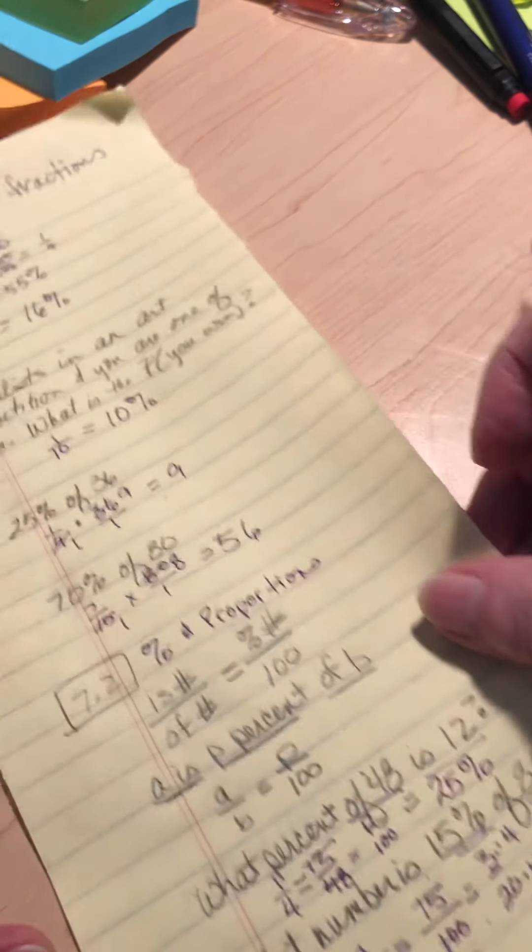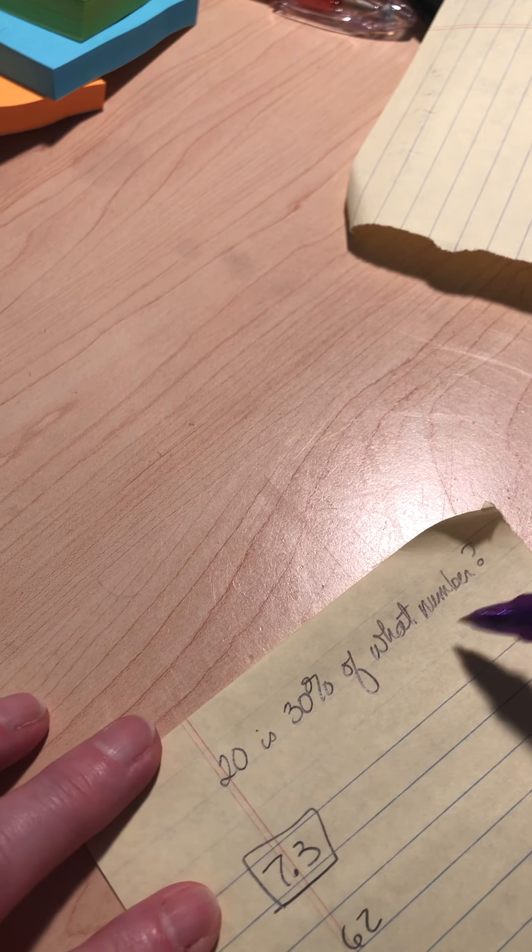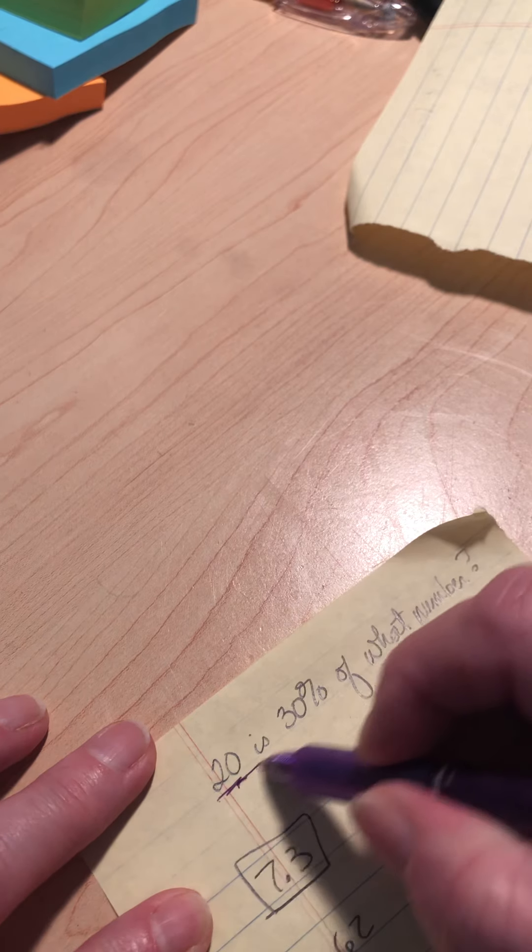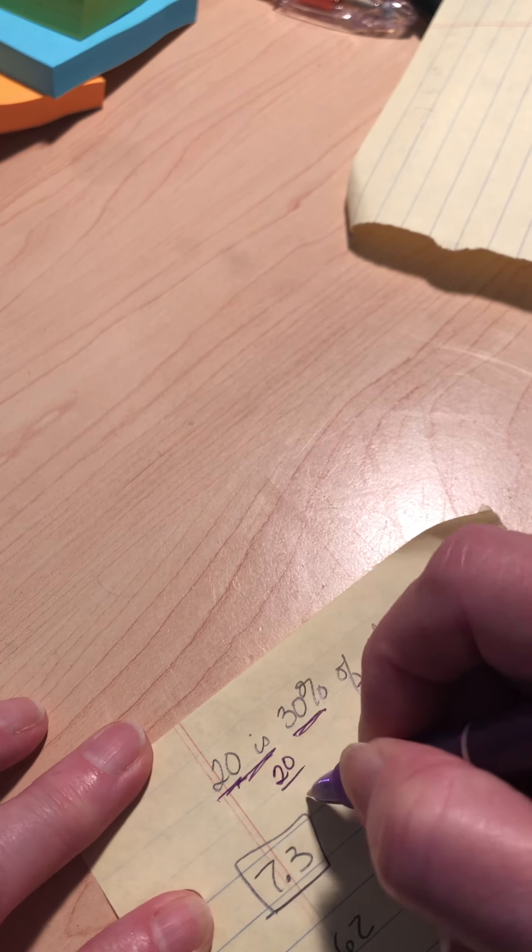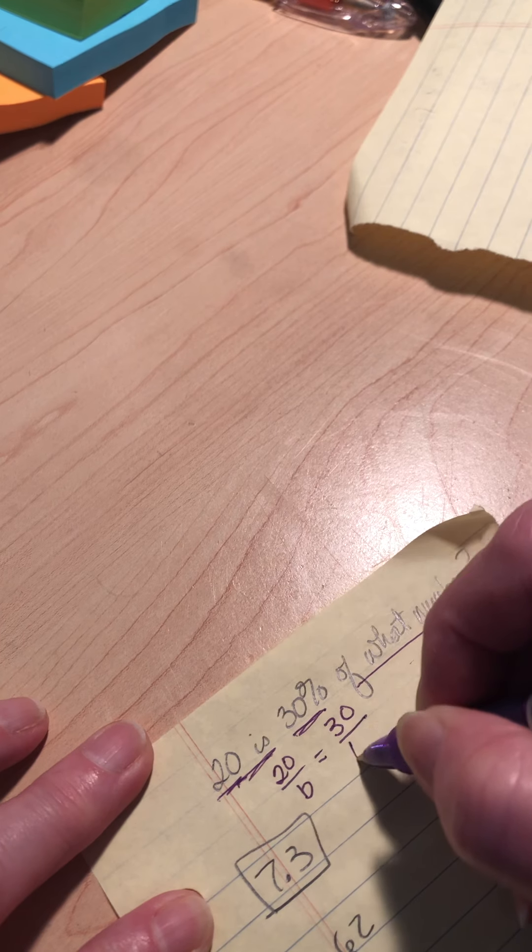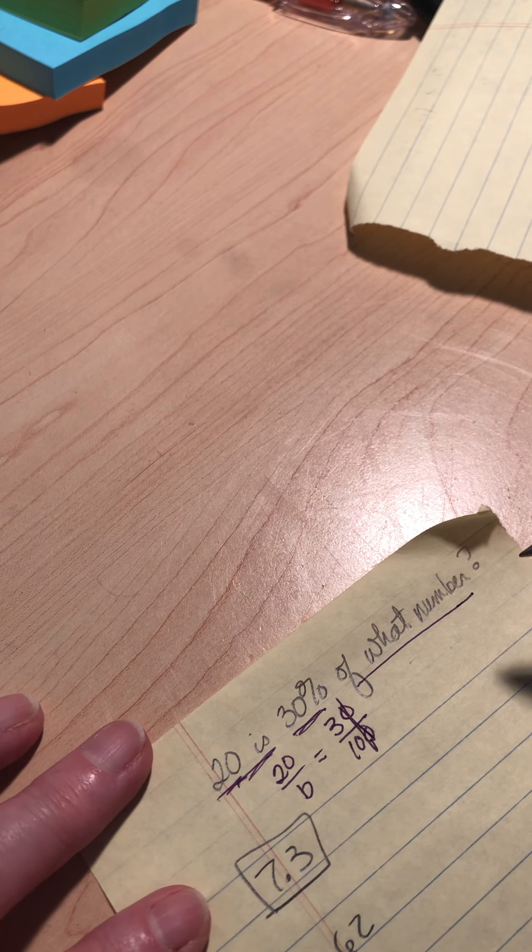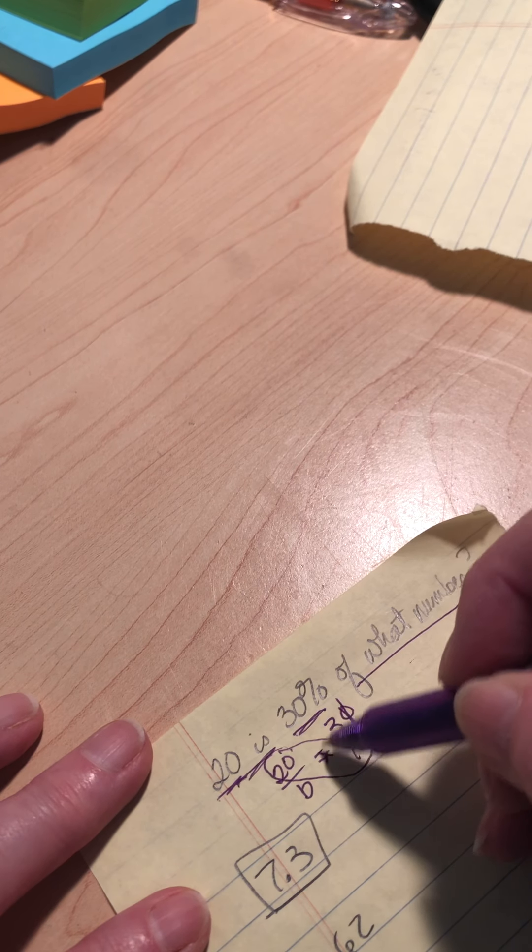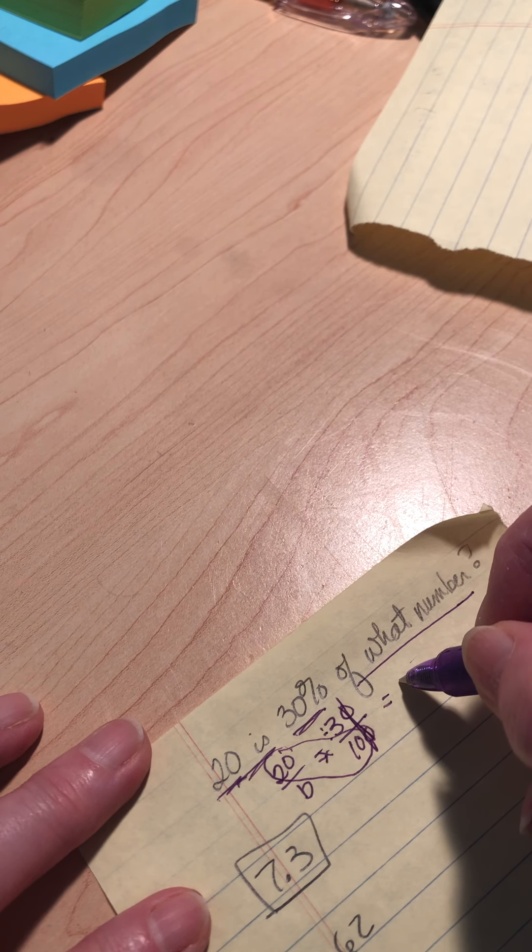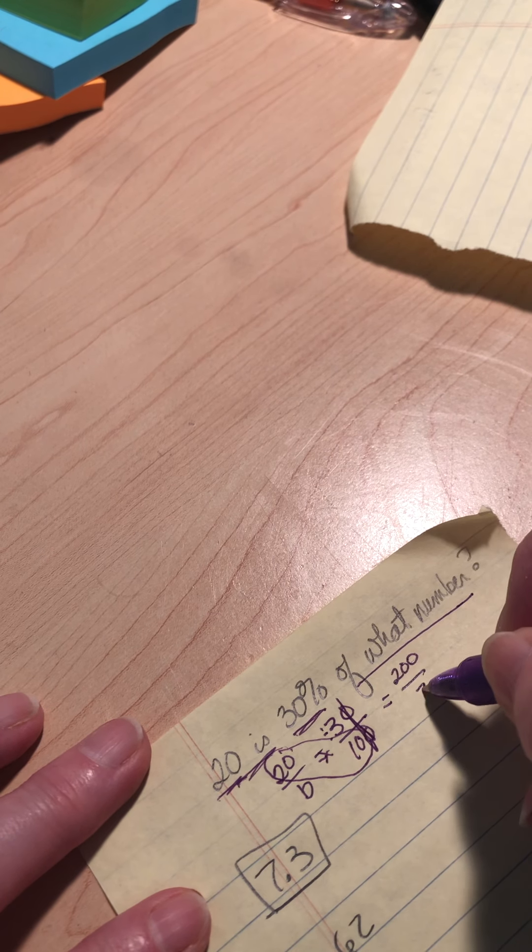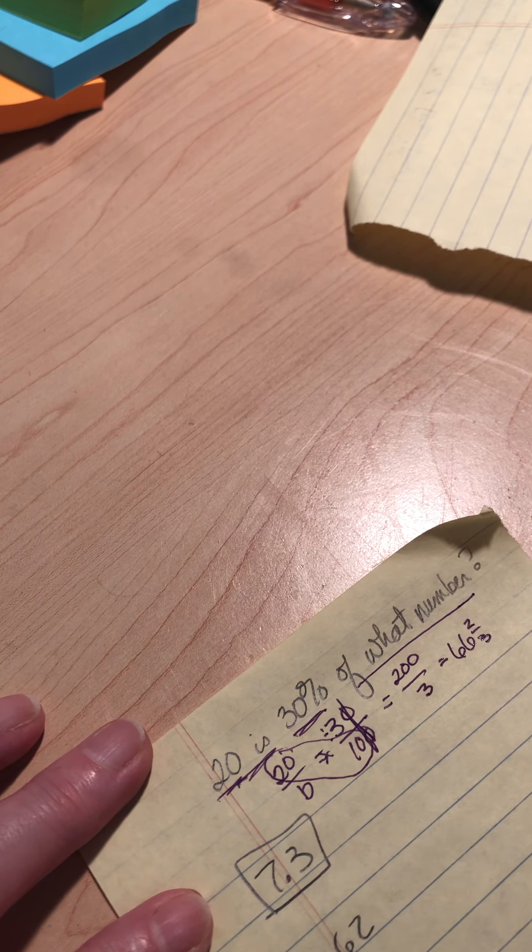So that kind of takes us, we got one more. What if I had 20 is 30% of what number? Well, I've got my is number, I've got my percent number, I don't have my of number. So that means I've got 20 over B equals 30 over 100. Those zeros cancel out. This is one where I would probably use my rule of 3. Cross multiply the 2 you can, divide by the third one. That gives me 200 over 3. And that's going to give me 66 and two thirds.